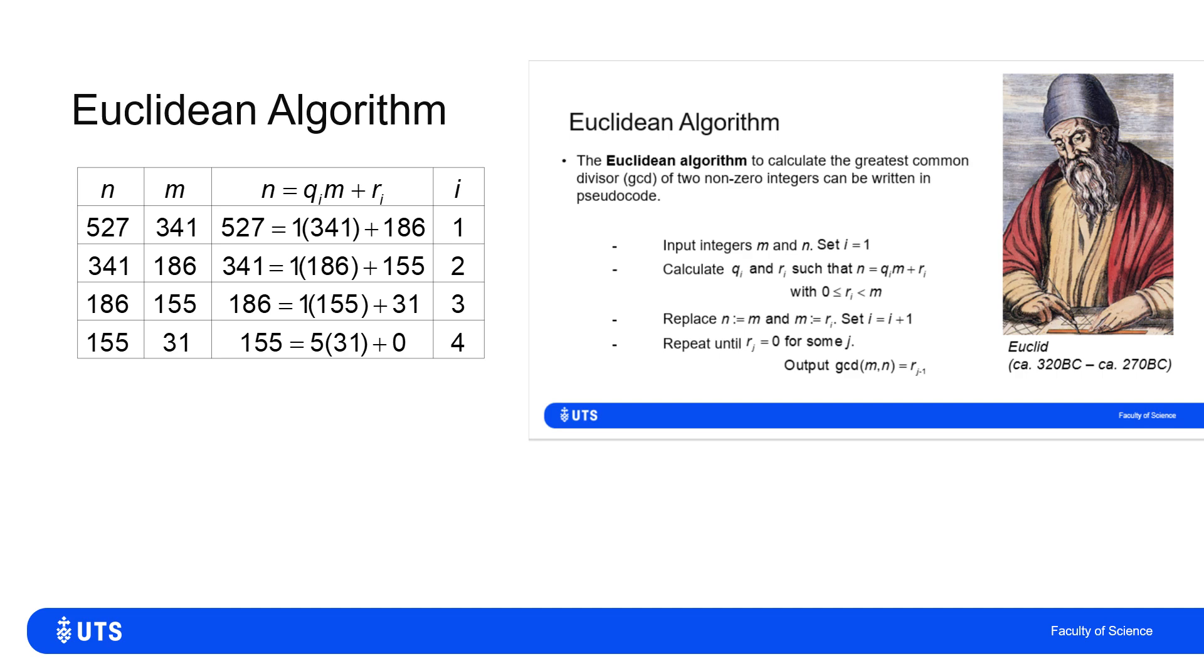So updating i now to be 2, I work out the greatest common divisor of 341 and 186. Well, 341 is 1 lot of 186 with a remainder of 155. So now N becomes 186, and M becomes 155.